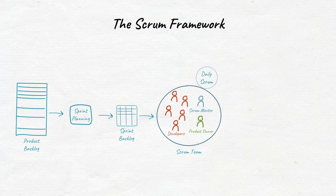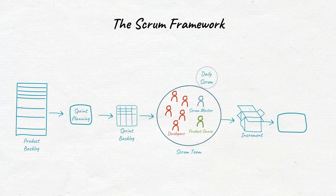An increment is a concrete stepping stone toward the product goal. The sprint review is used to inspect the outcome of the sprint as the Scrum team presents the results of their work to key stakeholders, and progress toward the product goal is discussed.